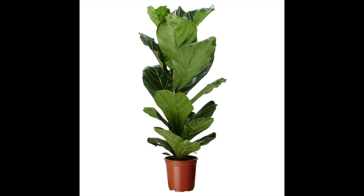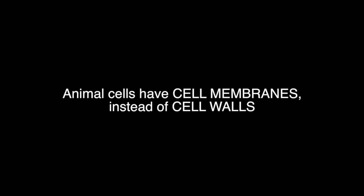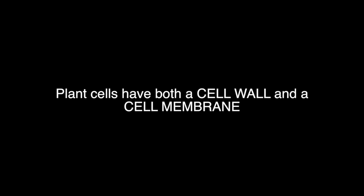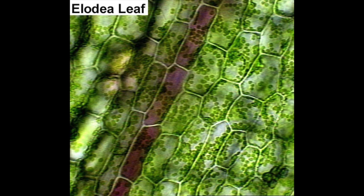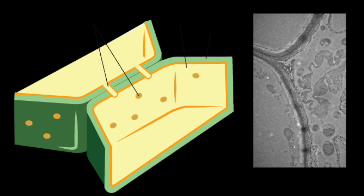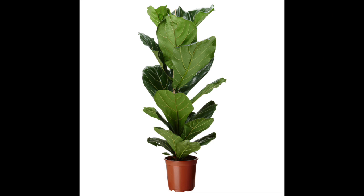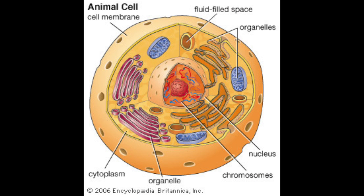An important note is that plant cells do have cell walls, while animal cells do not. Instead of a cell wall, animal cells have a cell membrane. However, plant cells have both a cell wall and a cell membrane. Cell walls look like big brick walls. If you look at a plant cell under a microscope, you will see a big formation of the cell wall that looks like a big brick wall. Because of the cell wall, plant cells look more like diamonds instead of spheres like animal cells.